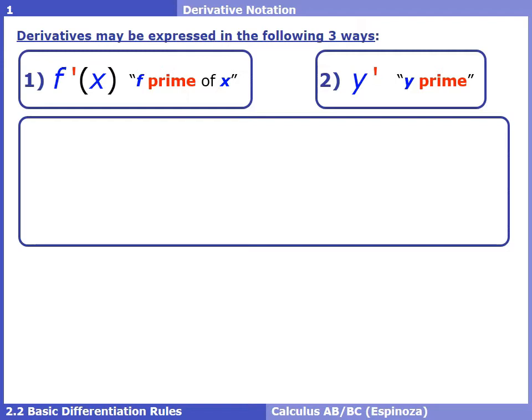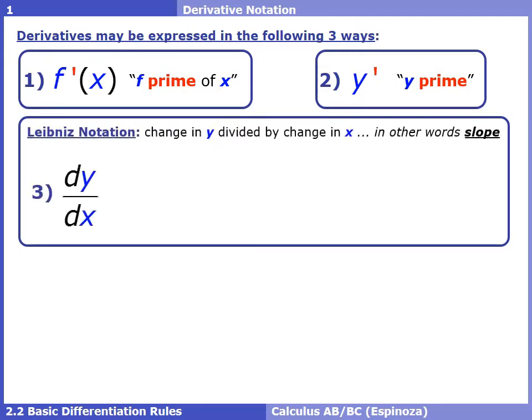The one that seems to throw off a lot of students is what is called Leibniz notation. It's written as dy over dx — a change in y divided by a change in x, or in other words, slope. So the notation makes sense: we have a change of y over change of x, which you know to be slope, which is a derivative.